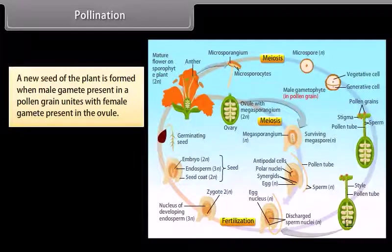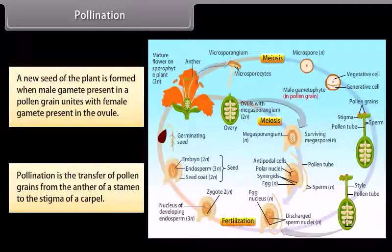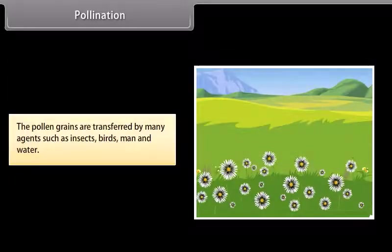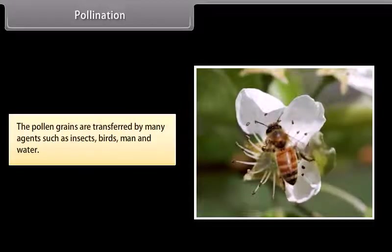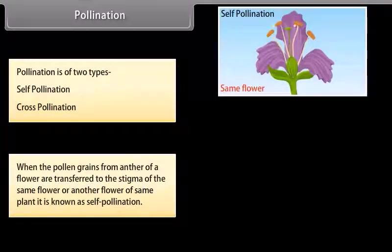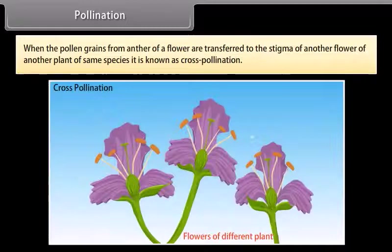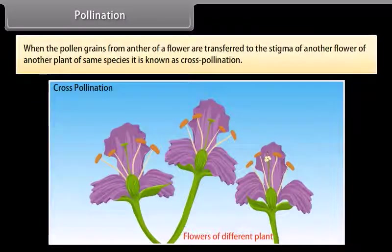A new seed of a plant is formed when the male gamete present in a pollen grain unites with the female gamete present in the ovule. Pollination is the transfer of pollen grains from the anther of a stamen to the stigma of a carpel. Pollen grains are transferred by many agents such as insects, birds, wind, and water. Pollination is of two types: self-pollination and cross-pollination. When pollen grains from the anther are transferred to the stigma of the same flower or another flower of the same plant, it is known as self-pollination. When pollen grains are transferred to the stigma of a flower of another plant of the same species, it is known as cross-pollination.